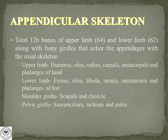Appendicular skeleton: a total of 126 bones of the upper limb and lower limb, along with bony girdles that anchor the appendages to the axial skeleton, are included within the appendicular skeleton. A total of 64 upper limb bones — including the humerus, ulna, radius, carpals, metacarpals, and phalanges of the hand — are included.